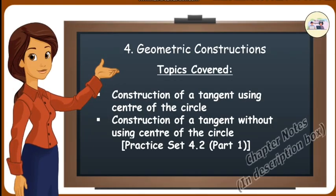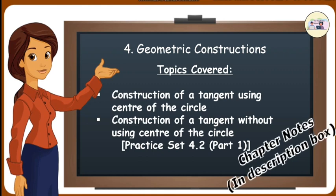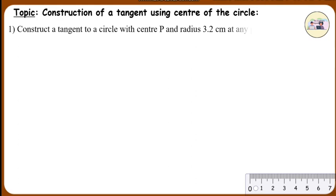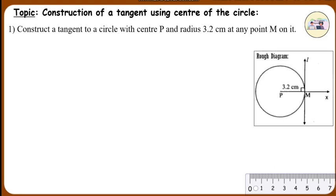Geometric constructions. Construction of a tangent using the center of the circle. Question 1: Construct a tangent to a circle with center P and radius 3.2 cm at any point M on it. Analysis: